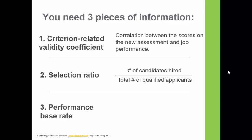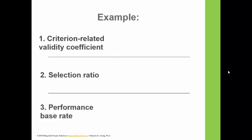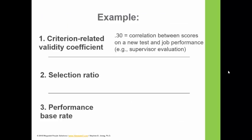The third piece of information is the performance base rate — the percentage of your current employees considered to be above-average performers. If you don't know that number, standard practice is to use 0.5, meaning 50% of employees are above average and 50% are below average.